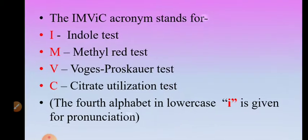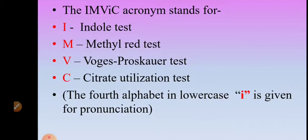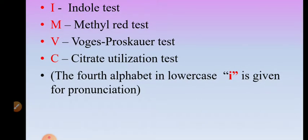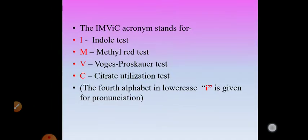In the IMVIC classification, the acronym stands for: I for indole test, M for methyl red test, V for Voges-Proskauer test, and C for citrate utilization test. So there are four tests. The fourth letter 'i' written in lower case is included for pronunciation purposes.